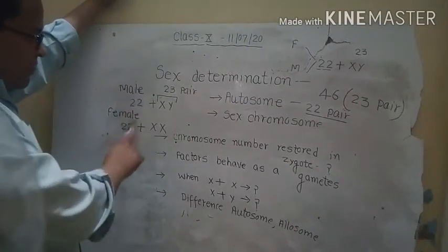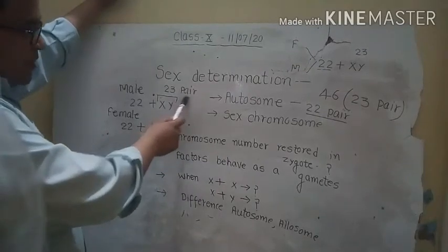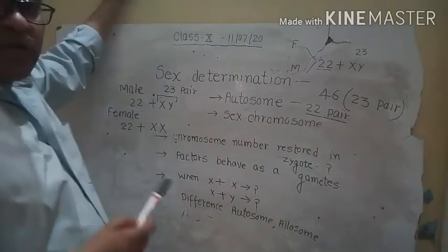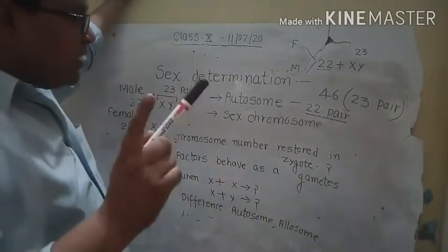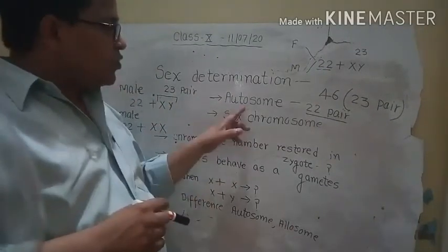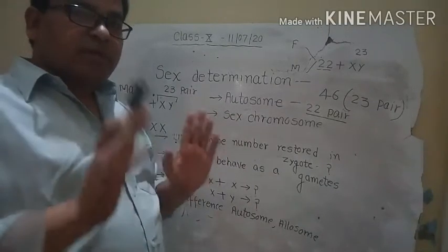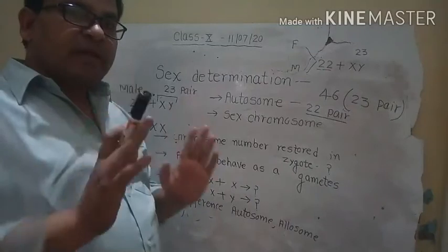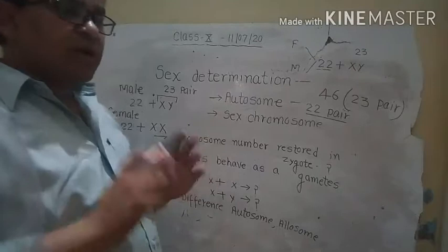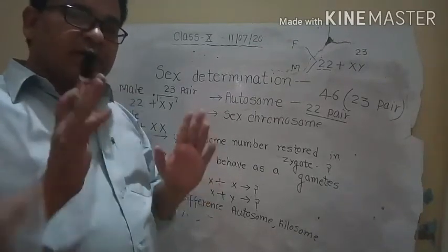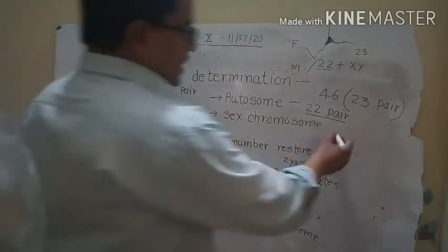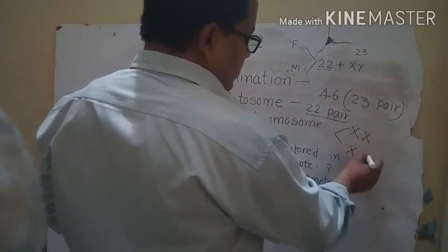You must be able to differentiate between autosomes and sex chromosomes. Autosomes are those chromosomes which will not play any role in determining the sex, and these are 22 pairs in number. While sex chromosomes are those which play an important role in determining the sex, and these are in the form of XX or XY.